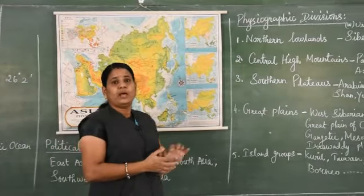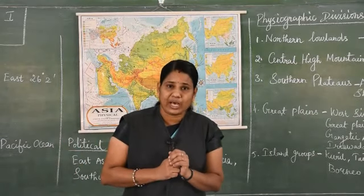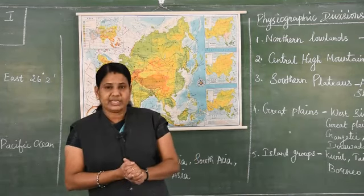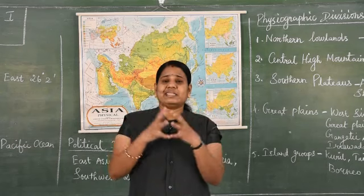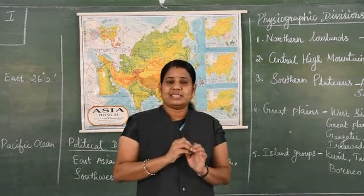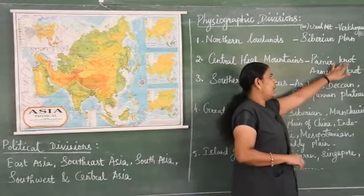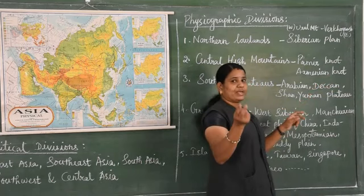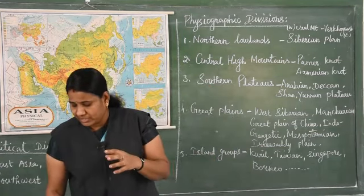It stretches from Turkey to Bering Strait. Great Plains - there are two knots found in Asia. What is a knot? Usually, a knot is where mountains connect - it is the convergence of mountain ranges. When we see the Central Highlands, we can see two important knots located in Asia. The first one is the Pamir knot, and the second one is the Armenian knot. Two knots are located in Asia - that means many mountains are converged or many mountain ranges connect.